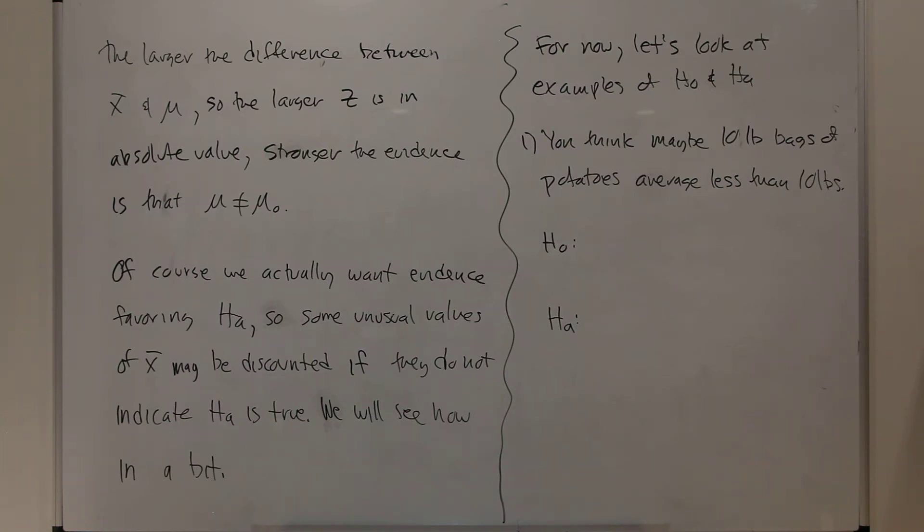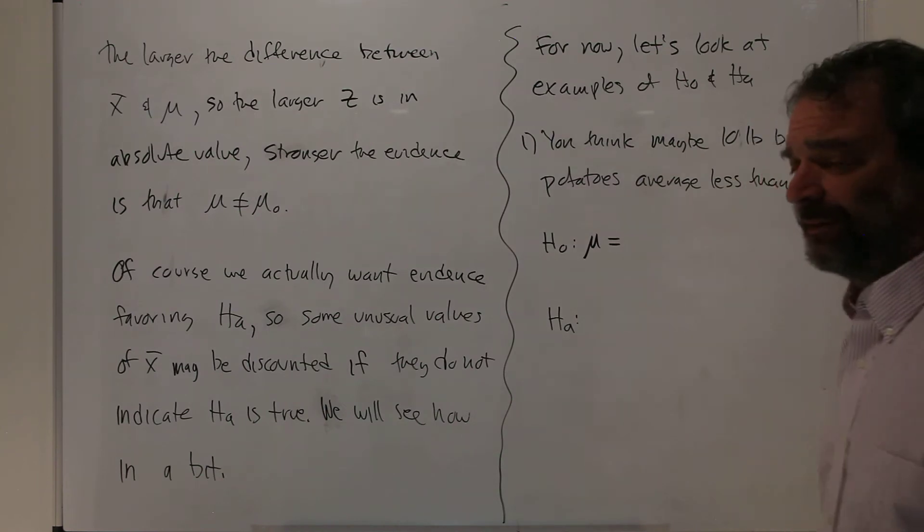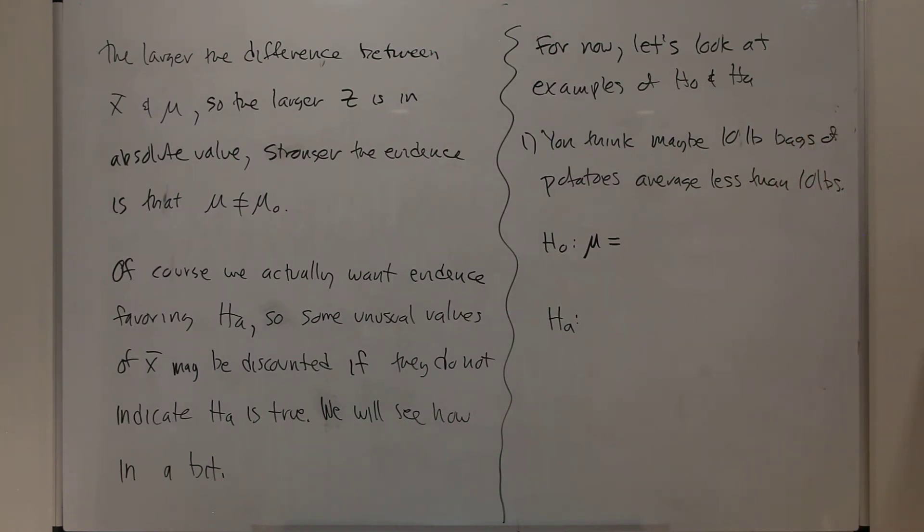The null hypothesis always looks like this. It's H0. The mean is equal to some number. You don't have a choice. H0 is mu equals some number. The number is what you think usually happens, so 10 pounds.